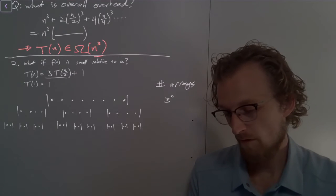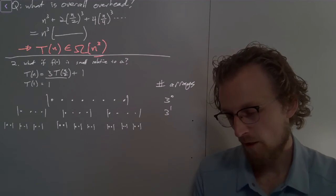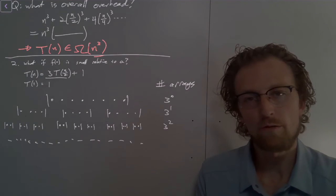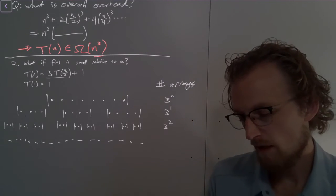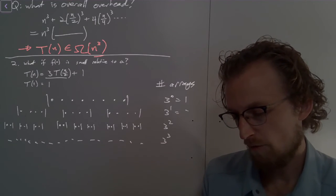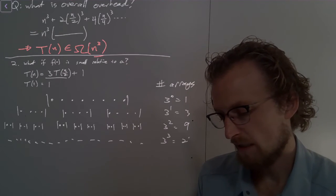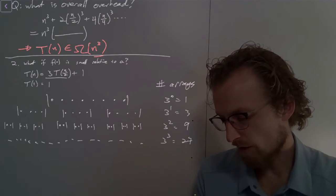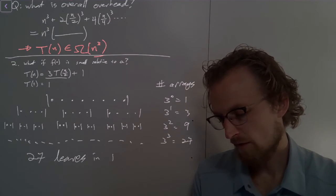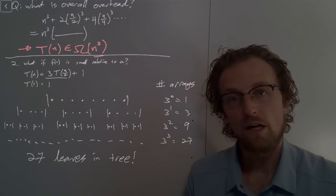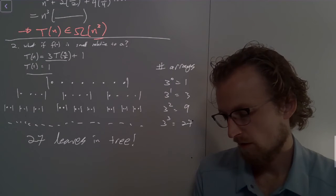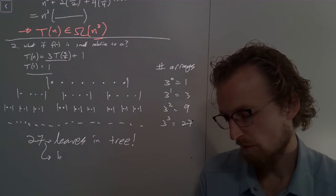So here we have 3 to the 0. Here we have 3 to the 1. Here we have 3 to the 2. And then down here, we're going to have this crazy blizzard of size one arrays, which we can express with 3 to the 3. So this is 1, 3, 9, 27. At the very bottom, we have 27. So there are 27 leaves in the tree, 27 base cases of the recursion get executed.